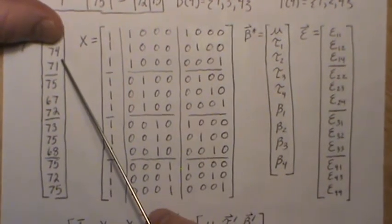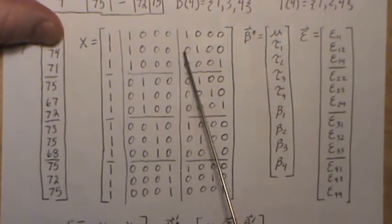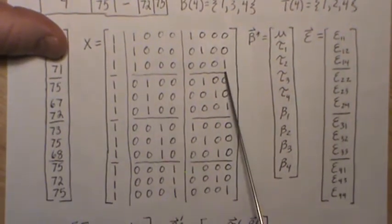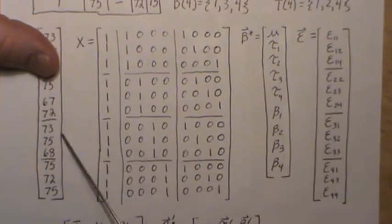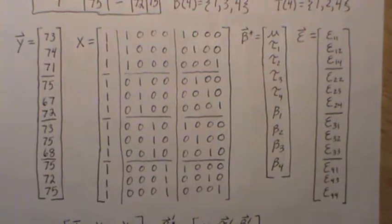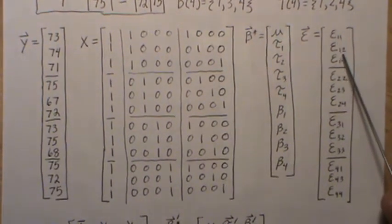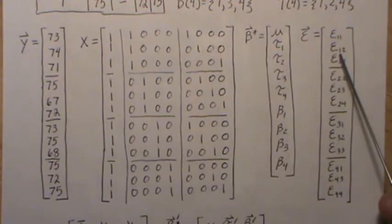The epsilons—the double index notation: epsilon_11 (treatment one, block one), treatment one block two, treatment one block four. The double notation is what's called over-indexed.